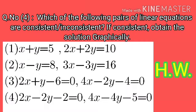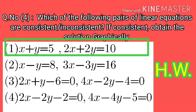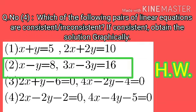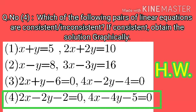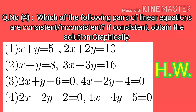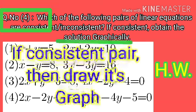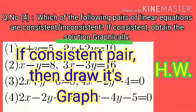Question number 4 asks which of the following pairs of linear equations are consistent or inconsistent. If consistent, obtain the solution graphically. The parts are: (i) x + y = 5 and 2x + 2y = 10; (ii) x − y = 8 and 3x − 3y = 16; (iii) 2x + y − 6 = 0 and 4x − 2y − 4 = 0; (iv) 2x − 2y − 2 = 0 and 4x − 4y − 5 = 0. Try these at home, and for question 4 draw the graph if consistent.